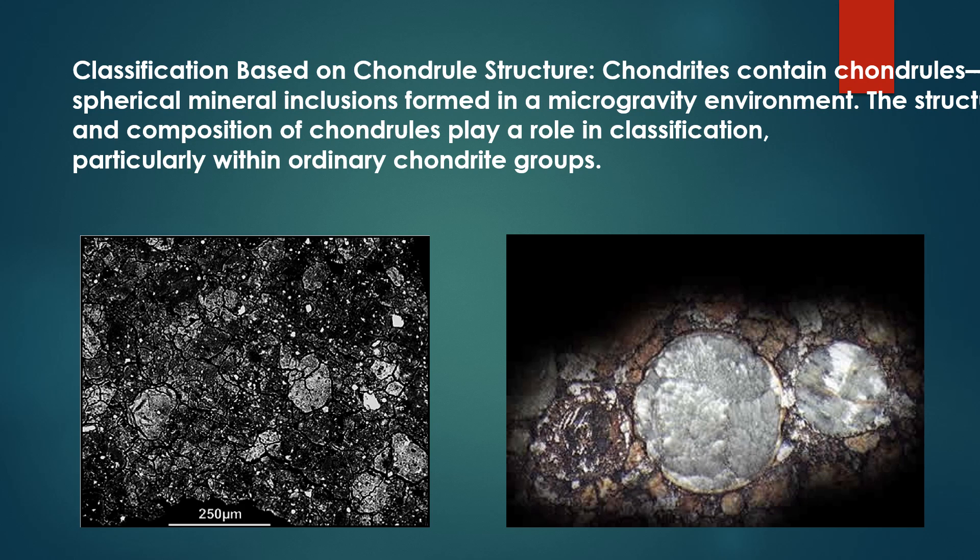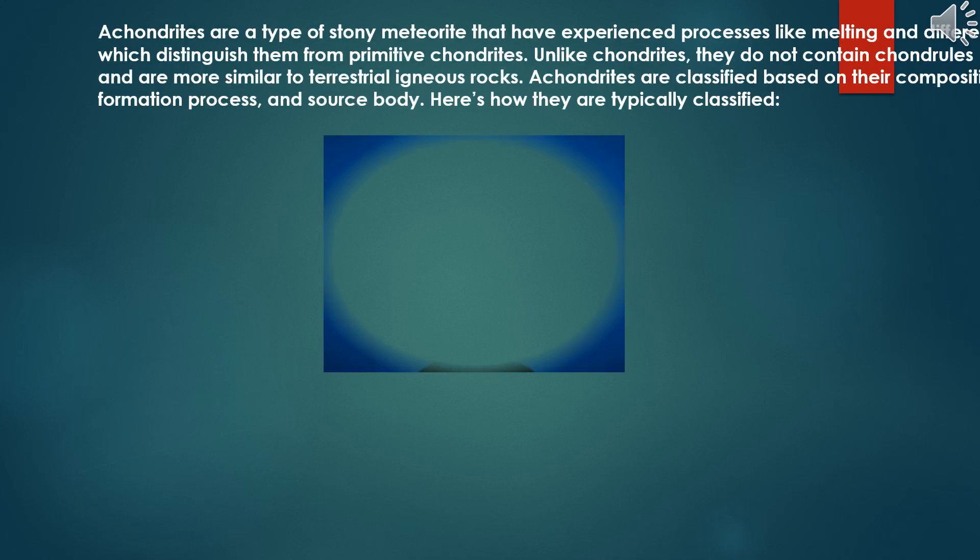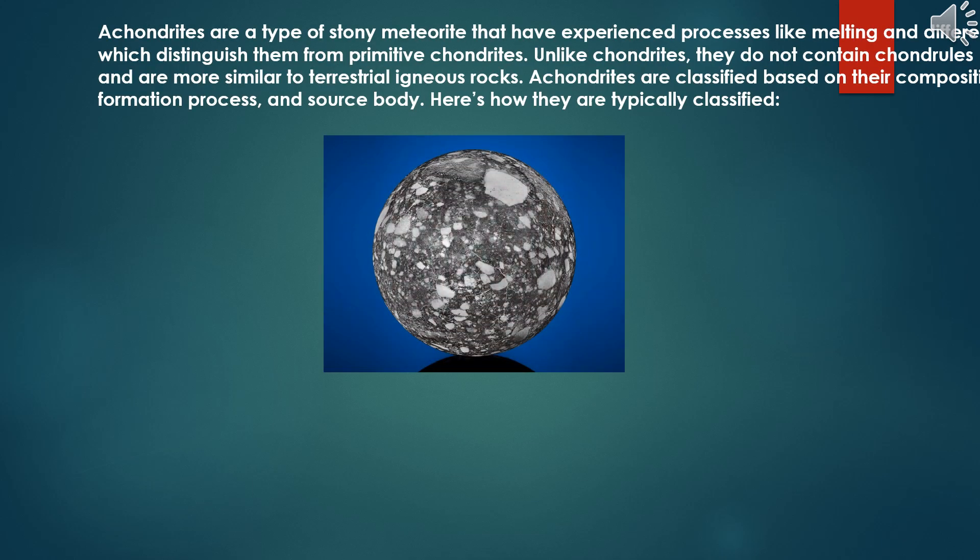Classifying chondrite meteorites requires a combination of mineralogical, chemical and structural analyses for accurate results. Achondrites are a type of stony meteorite that have experienced processes like melting and differentiation, which distinguish them from primitive chondrites. Unlike chondrites, they do not contain chondrules and are more similar to terrestrial igneous rocks. Achondrites are classified based on their composition, formation process and source body.